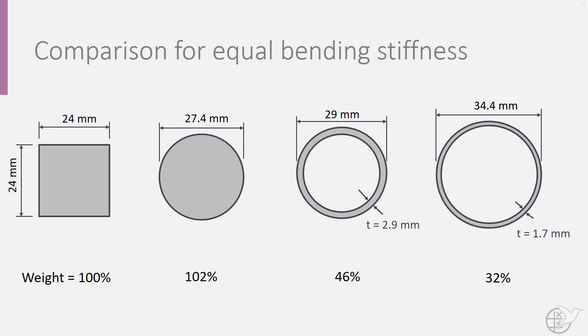Here, the hollow tubes are far more efficient as they remove material that is close to the neutral axis that does not contribute much to the bending stiffness, and increases the efficiency of the remaining material by placing it further away from the neutral axis.